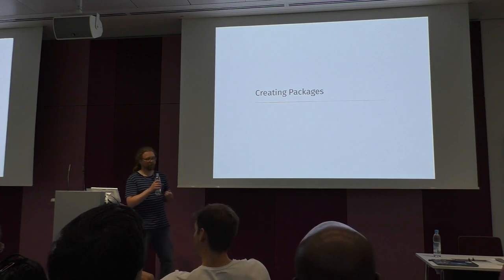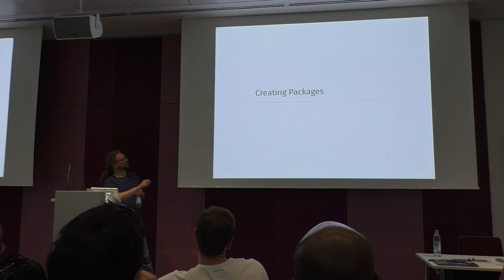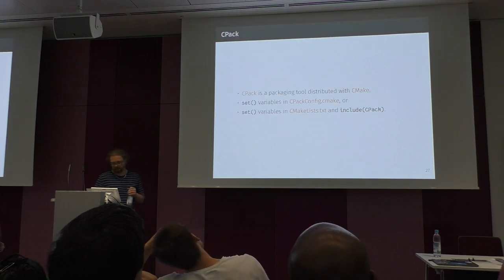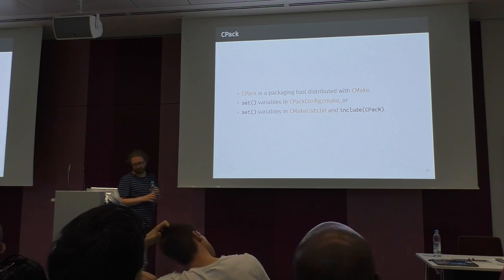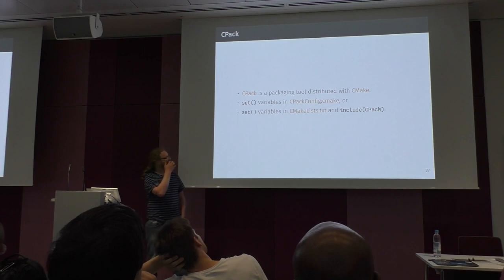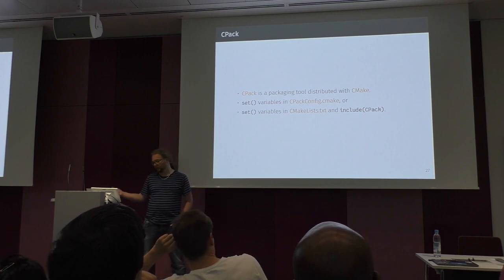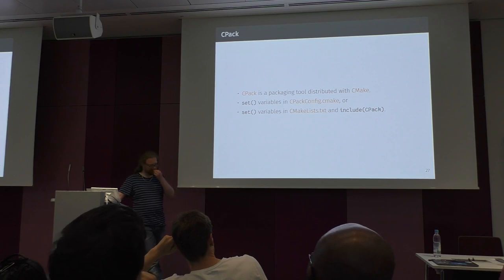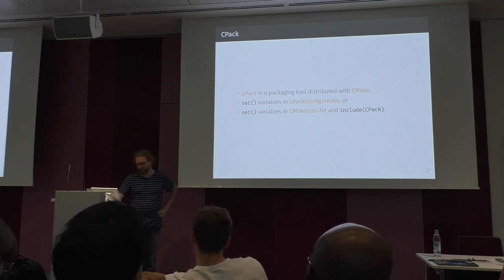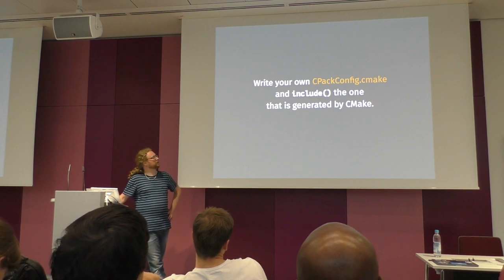Let's wrap that into a package. CMake comes with a tool called CPack, which is simple — you just have a cpackconfig.cmake where you set some variables. You can also set those variables in your CMakeLists.txt and include the CPack module, which writes them to cpackconfig and gives you a build target called 'package' that simply calls CPack. A hint: write your own cpackconfig and also let CMake generate one, then in your own one include the generated one.